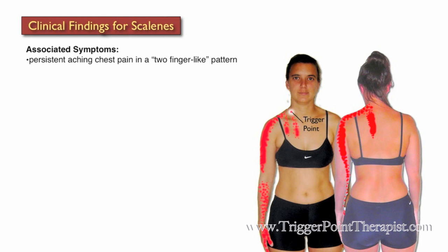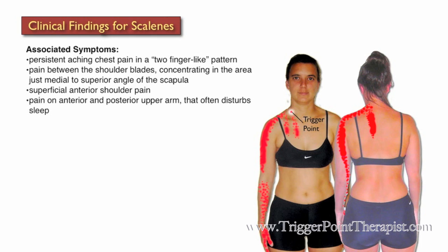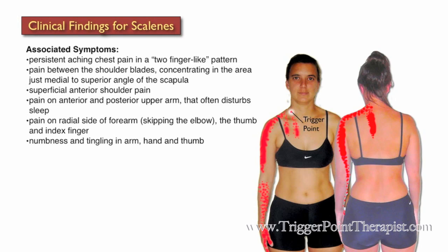Symptoms associated with trigger points in the scalene muscles include persistent aching chest pain in a two-finger-like pattern, pain between the shoulder blades concentrating just medial to the superior angle of the scapula, superficial anterior shoulder pain, pain on the anterior and posterior part of the upper arm that often disturbs sleep, pain on the radial side of the forearm that skips the elbow and travels down the thumb and index finger, numbness and tingling in the arm, hand and thumb, and edema or puffiness in the hand, especially in the morning.